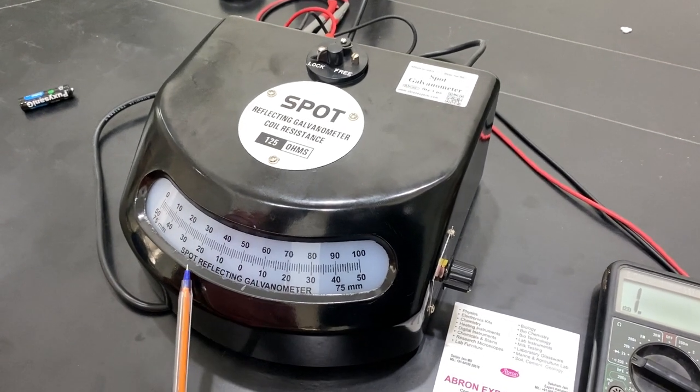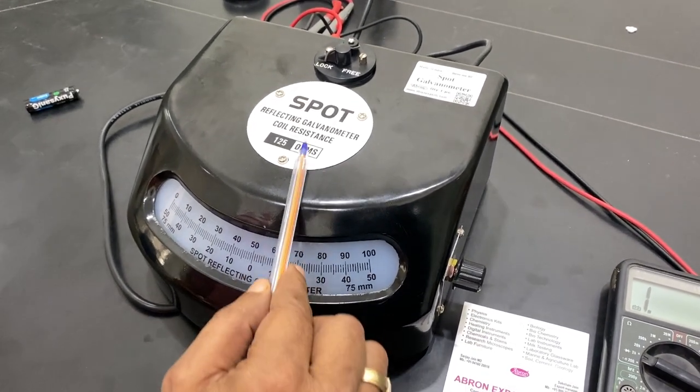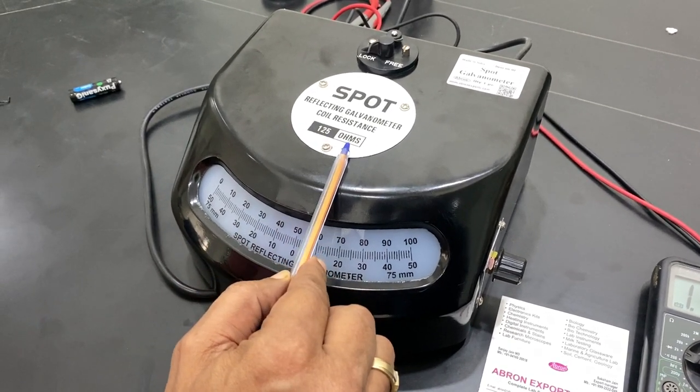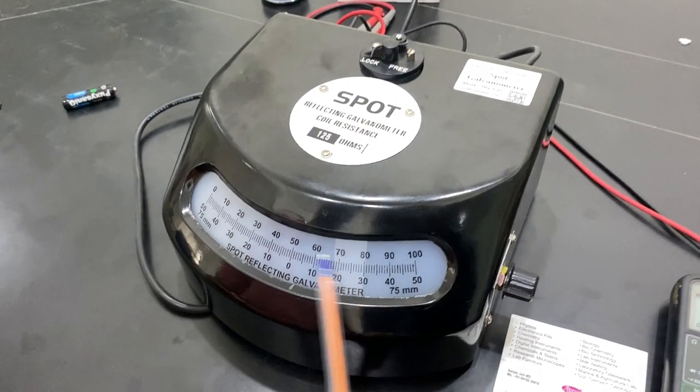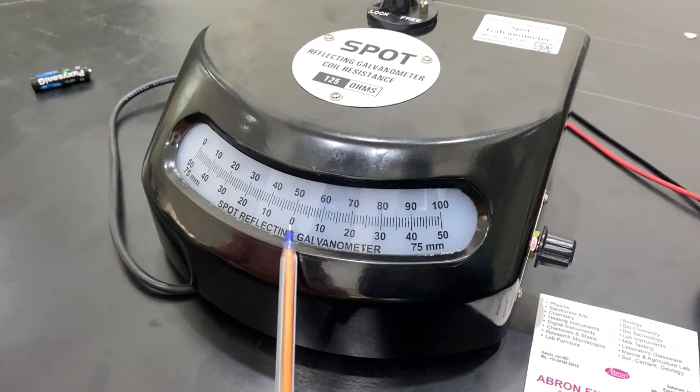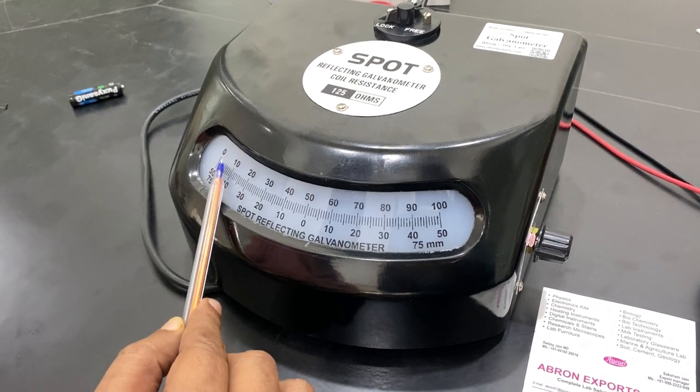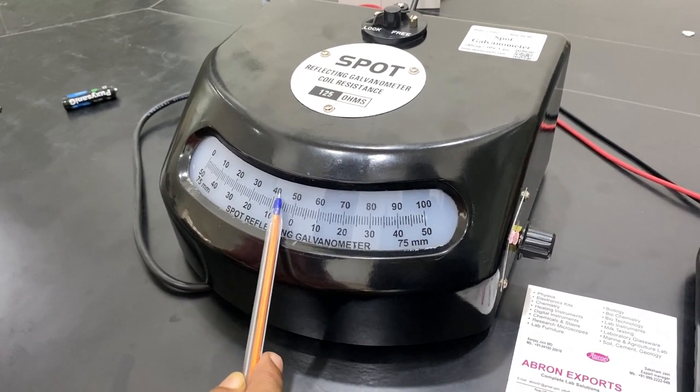This is a spot reflection galvanometer with 125 ohms value. Now this is the scale which is 0 to 50 and here also again 0 to 50. If you count from the other side it is 0 to 50.